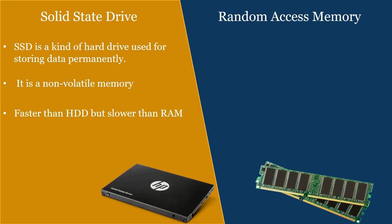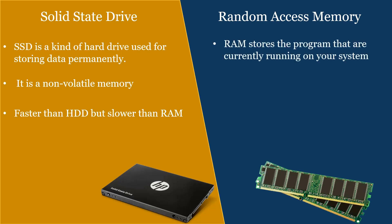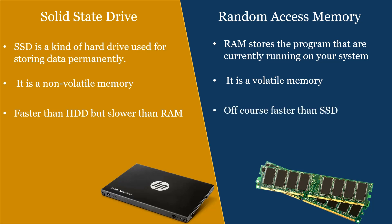Now let us learn about RAM, i.e. Random Access Memory. RAM is a temporary memory that stores programs that are currently running on your system. Initially, all the software, operating system, programs, and applications are stored in the hard drive. When we switch on the computer, the first thing that gets loaded on RAM is the operating system. Next, whatever software or application we launch gets loaded on RAM, from where the CPU can process them. So if you have a bigger RAM size, you can parallelly run multiple applications or heavy applications. RAM is a volatile memory, which means as soon as power gets off, the data in RAM vanishes. But in terms of speed, it is faster than SSD and hard drive.